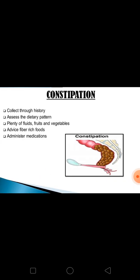Next is constipation. Collect a thorough history, any associated illness, the patient's pattern of work and mobility, and type of diet. Advise the need for movement in inactive people. Advise drinking plenty of fluids, eating fruits and more vegetables, and eating fiber-rich foods — for example, raspberries, coconuts, split peas, lentils, and oats. Administer mild laxatives as per institutional policy.